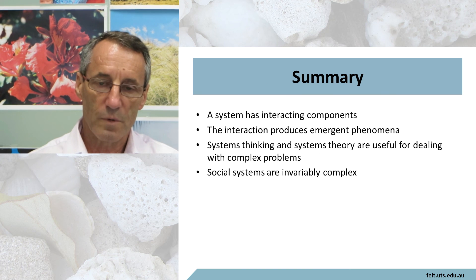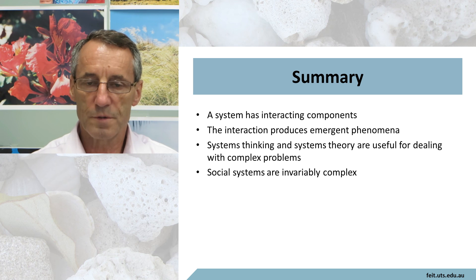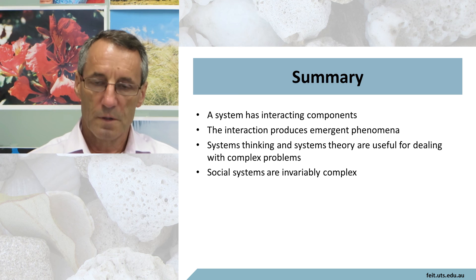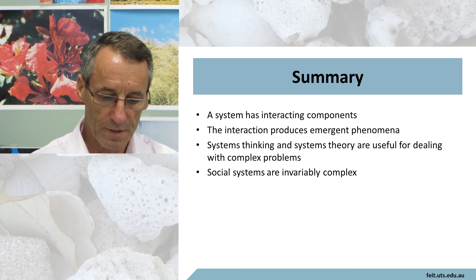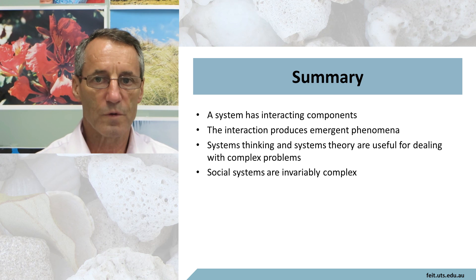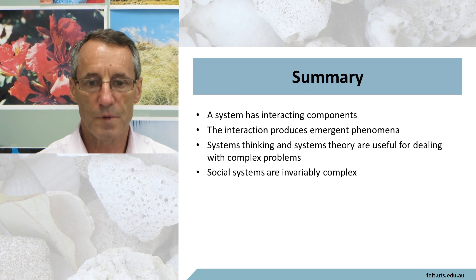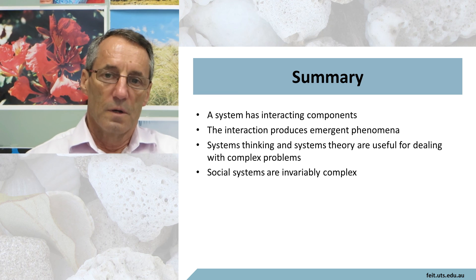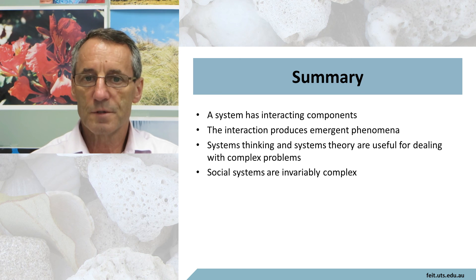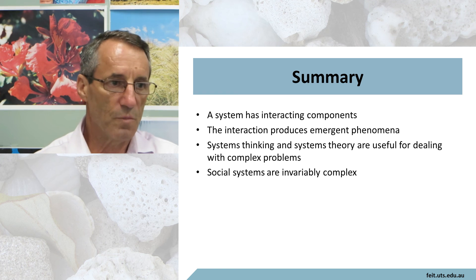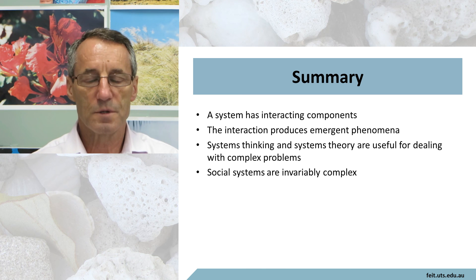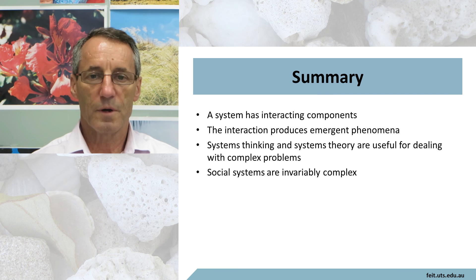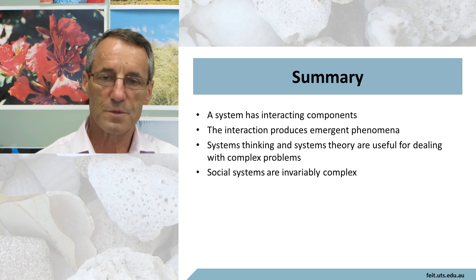In summary, the definition of a system is something that has components that are interdependent and interact. The interactions within a system usually produce emergent phenomena. Systems thinking and systems theory are quite useful for dealing with complex problems. Social systems and social problems tend to be complex — sometimes called wicked problems — where there isn't a definitive solution; all you can do is change them from one state to another. And that covers systems thinking, systems theory, and the basic definitions and concepts for systems.